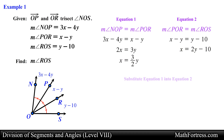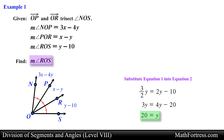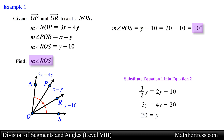Now we can go ahead and substitute one of these two equations into the other. Let's substitute the first equation into the second equation. Now let's get rid of the fraction by multiplying the entire equation by the value in the denominator. From here it is just a matter of solving for y. Doing that we obtain y equals 20. Now we can determine the measurement of angle ROS. Substituting the value of y into the algebraic expression we obtain 10 degrees, and this is our final answer.